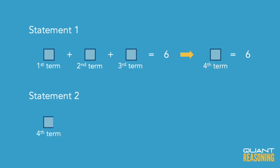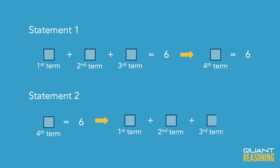Now if we know that the fourth term is six, we can infer that the sum of the first three terms is six, because they told us that that's the rule for this sequence.